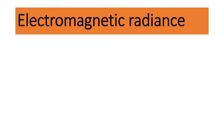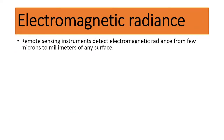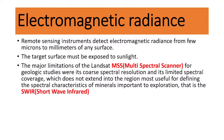Remote sensing instruments detect the electromagnetic radiance from a few microns to millimeters of any surface, and the target surface must be exposed to sunlight. The major limitation of Landsat imagery, mainly multi-spectral sensors, for geological studies is the spectral resolution and its limited spectral coverage, which does not extend into the region most useful for defining the spectral characteristics of minerals important to exploration — that is the short wave infrared band.